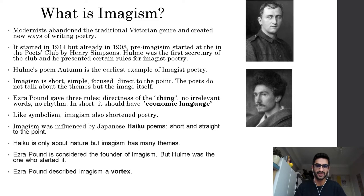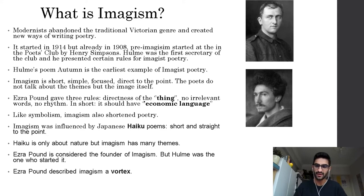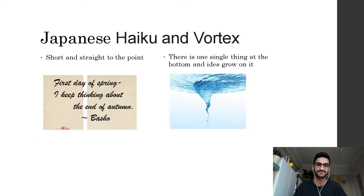Haiku is only about nature, but imagism has many themes. The poets of imagism were influenced by Japanese haiku, but imagism talks about so many different things. Ezra Pound is considered the founder of imagism, but Hulme was the one who actually started it with the poem 'Autumn.' Pound also described imagism as a 'vortex.' In the next slide we can see what the vortex concept means alongside an example of Japanese haiku.